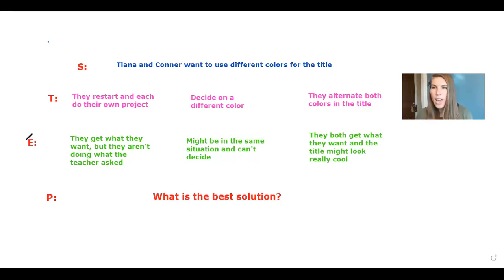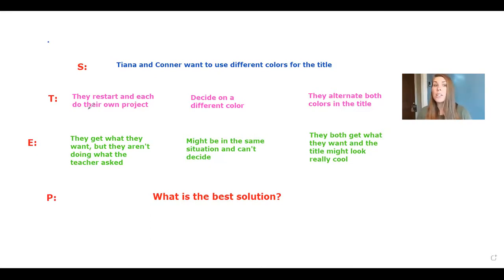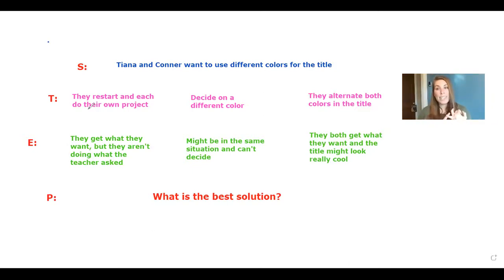Now we go to E — explore the consequences of those solutions. If they choose a solution, what could happen? What is something good and what is something bad? How are they both going to feel? For solution one — they restart and each do their own project — a positive is they both get what they want and can each use their own color. But a negative is they aren't doing what the teacher asked, and they might not have enough time to finish since they're almost done with this project.